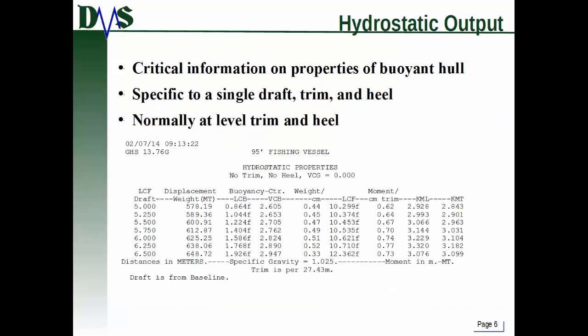The hydrostatic output gives you the critical properties of the buoyant hull — just the buoyant section — and it is specific to a single draft, trim, and heel. Conventionally, hydrostatic output is written with no trim and no heel, but there are situations where it's useful to know the hydrostatics for a certain trim and heel.